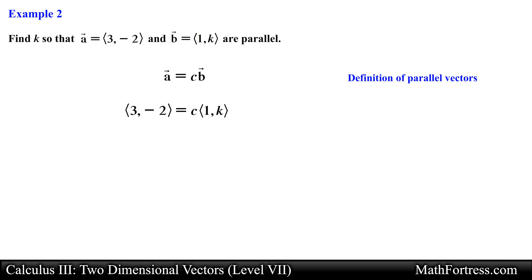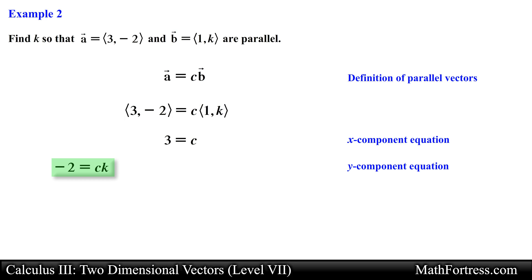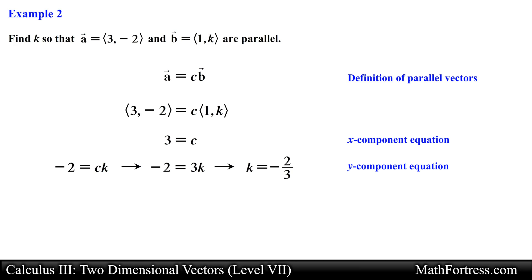Recall that two vectors are parallel to one another if one vector is a scalar multiple of the other vector, in other words vector A equals C times vector B. We first break apart this vector relation component wise, which yields two distinct equations. The x components yield the equation 3 equals C, and the y components yield the equation negative 2 equals C times K. We know from the first equation that C equals 3, so we substitute this value into the second equation and solve for K. So in order for these two vectors to be parallel, vector B has to have a y component equal to negative 2.